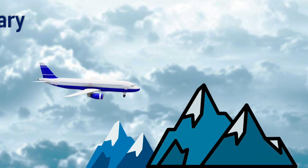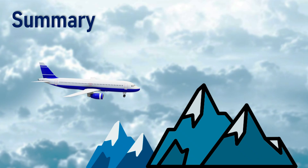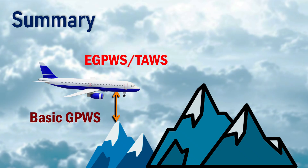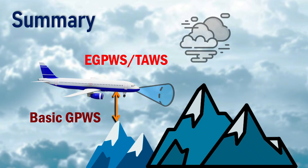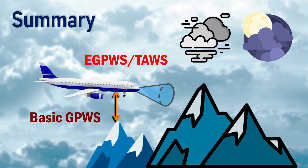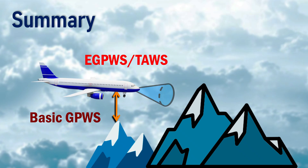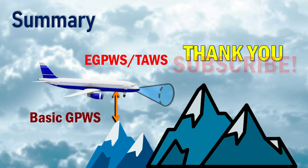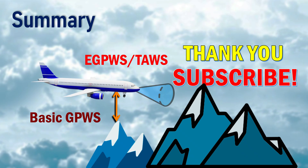To summarize, the basic GPWS relies on terrain that is below the aircraft. The EGPWS or TAWS senses terrain or obstacles ahead of the aircraft. Both these safety systems become crucial during low visibility or night operations. That's all for this video on the GPWS. Thank you for watching. If you liked the video, please share and subscribe, and you can continue watching some of my other videos as well.